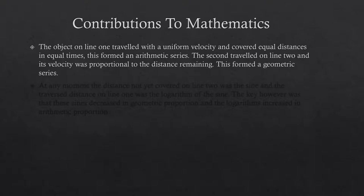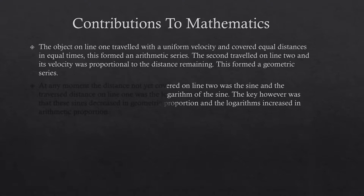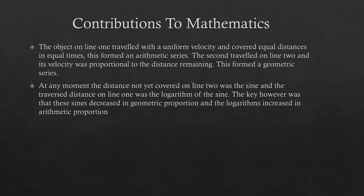At any moment, the distance not yet covered on line 2 was the sine. The distance on line 1 was the logarithm of the sine. The key, however, was that these sines decreased in geometric proportion and the logarithms increased in arithmetic proportion.